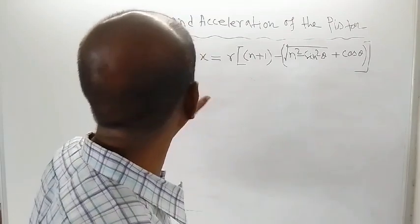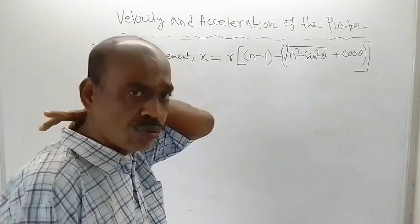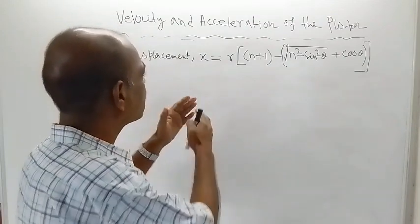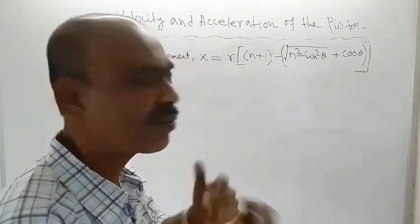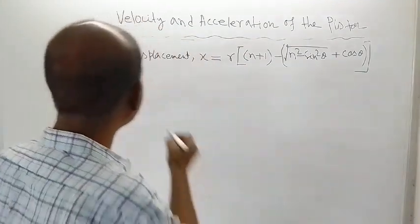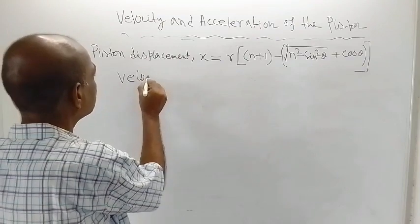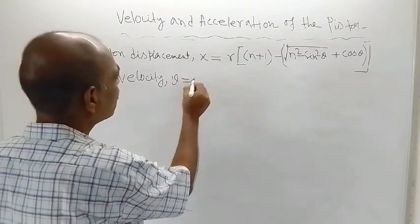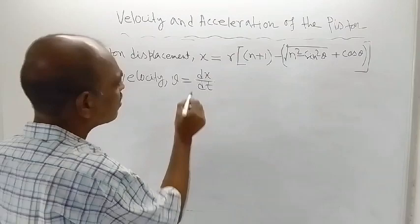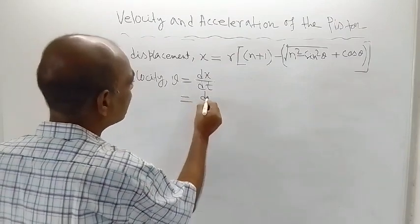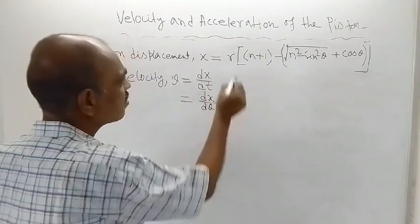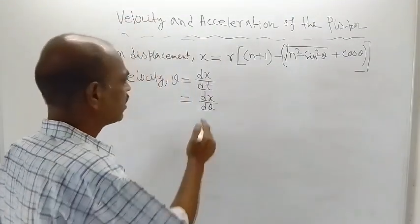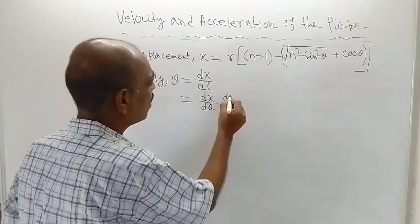To find out velocity and acceleration of the piston, displacement is known. If you take the differentiation of displacement with respect to time, you will get velocity. Velocity v is equal to dx/dt. Since t is not present in the expression — instead, θ is present — this can be written as (dx/dθ) · (dθ/dt).